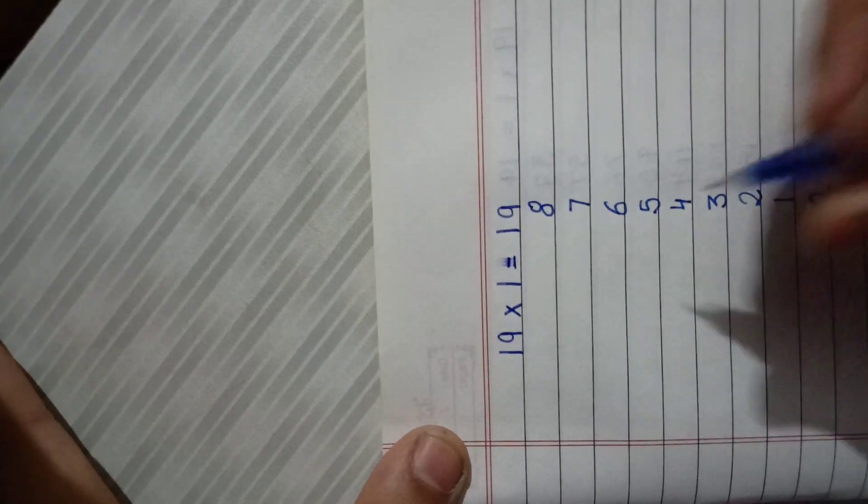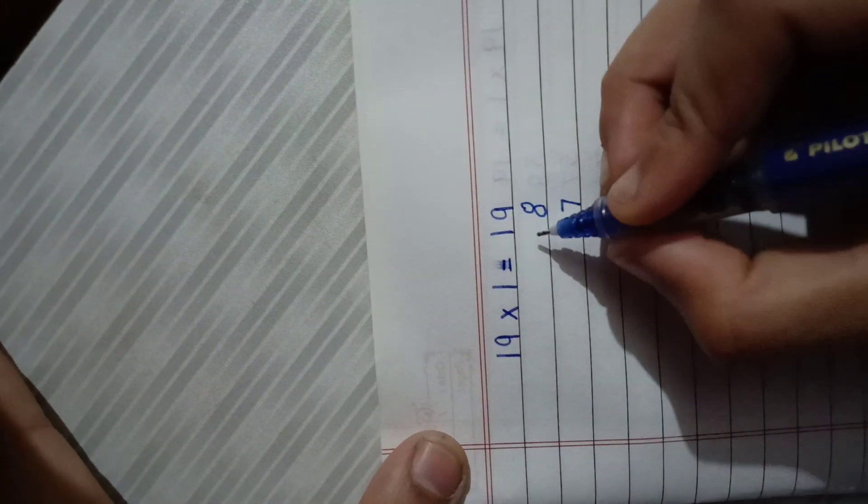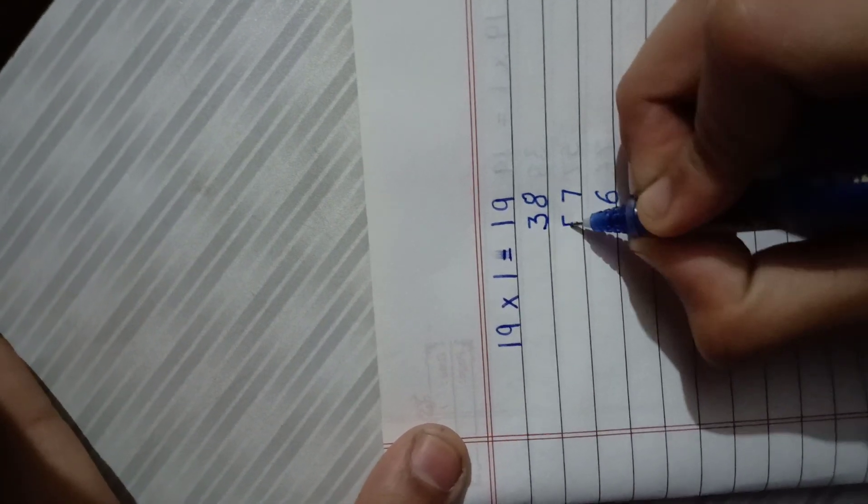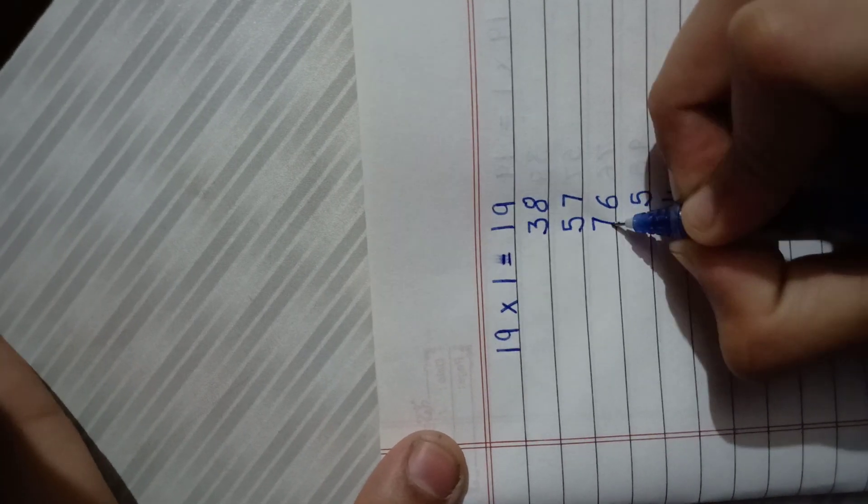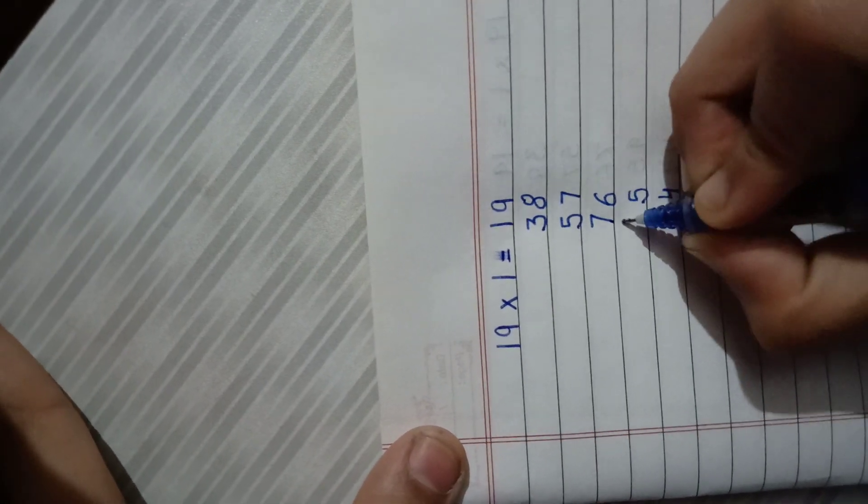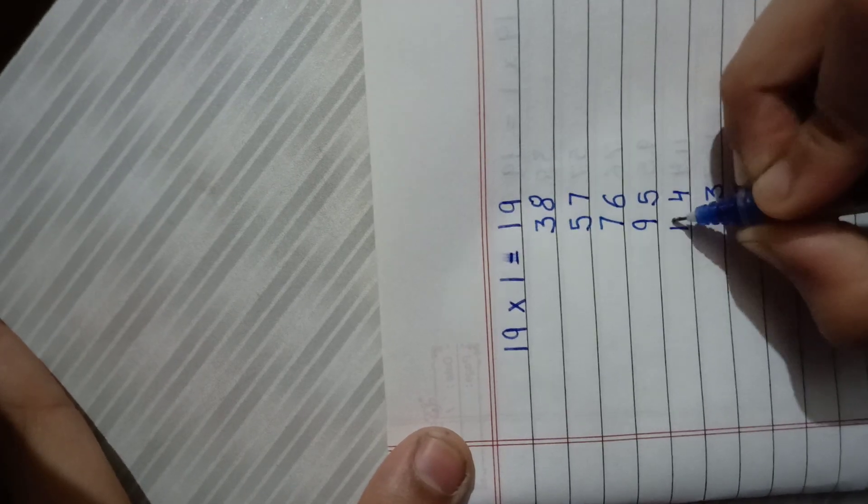And after that we have to write odd numbers. Do you know what are odd numbers? Odd numbers are the numbers that cannot be divided by two.